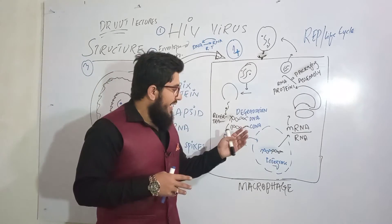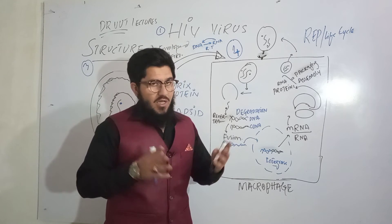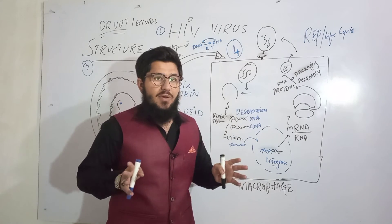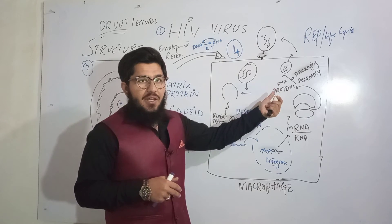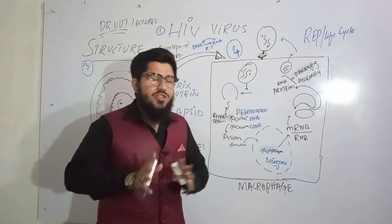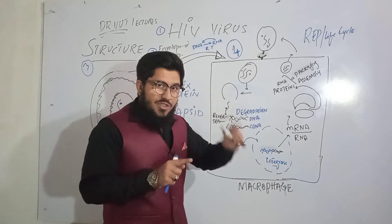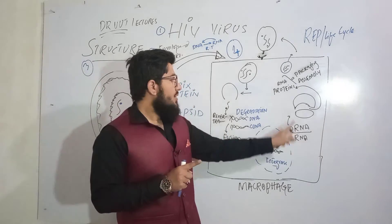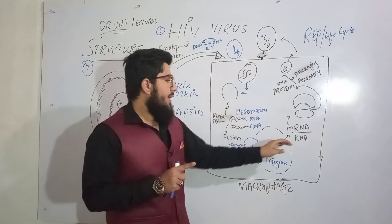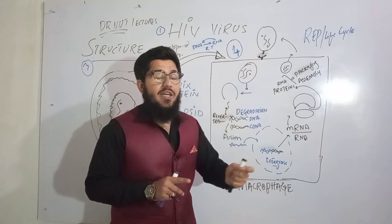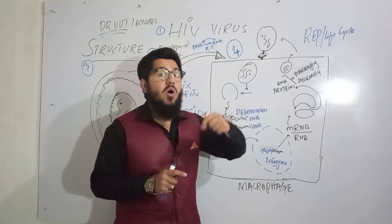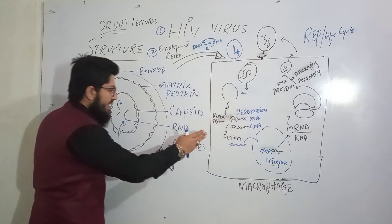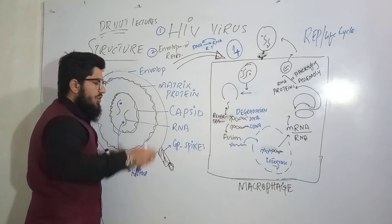After this integration, the DNA is free to transcribe — it can synthesize messenger RNA. During transcription, two types of RNA will be synthesized: viral RNA, and messenger RNA carrying information to synthesize all the proteins needed for the virus — including integrase, reverse transcriptase, capsid proteins, matrix protein, and GP spikes.